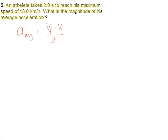What is the initial velocity? Initial velocity V1 is 0, so we have V final by T.